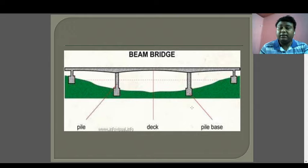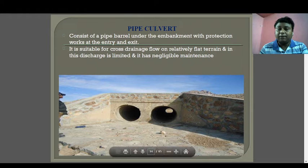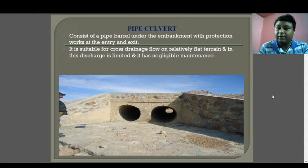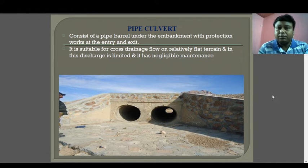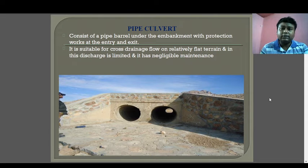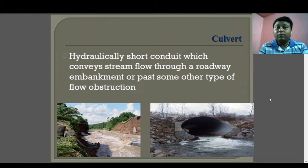A pipe culvert is the type found in rural or semi-urban areas. It is basically provided where there is heavy rainfall so that water can circulate from one portion to another — without it, water will stack and the area will flood. The pipe culvert consists of a pipe barrel under the embankment with protection work at the entry and exit. As mentioned earlier, if the length of the span is less than six meters, it is called a culvert.